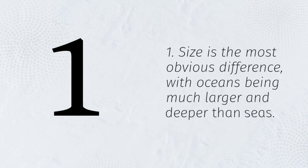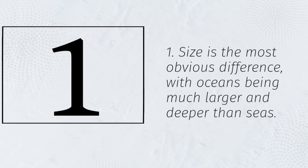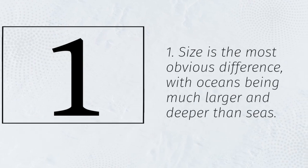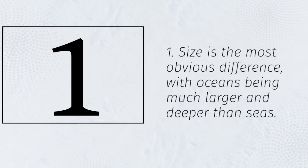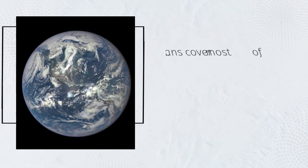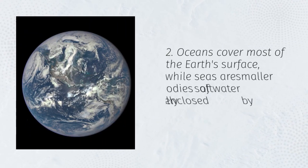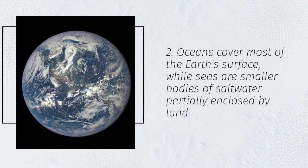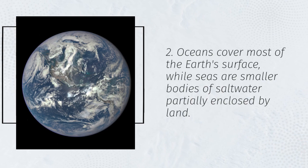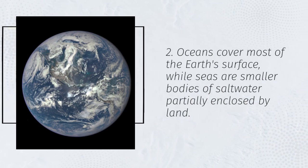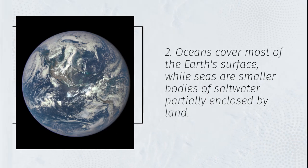Size is the most obvious difference, with oceans being much larger and deeper than seas. Oceans cover most of the Earth's surface, while seas are smaller bodies of saltwater partially enclosed by land.